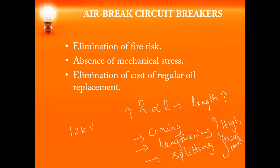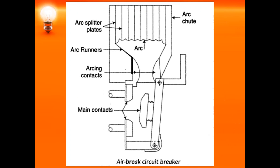Now let us see the arc chute type air break circuit breaker. As you can see in the diagram, this arc chute type circuit breaker has mainly the main contacts and the arcing contacts. You also have the arc runners on both sides, and the vertical lines are called arc splitter plates. Together these form the arc chute.